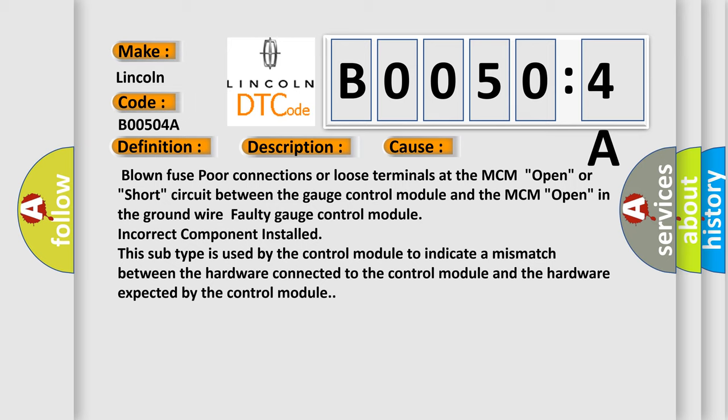Open in the ground wire, faulty gauge control module, incorrect component installed. This subtype is used by the control module to indicate a mismatch between the hardware connected to the control module and the hardware expected by the control module.